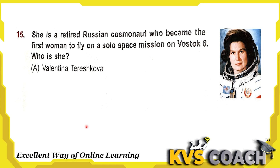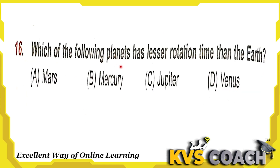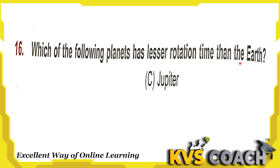Next question: which of the following planets has a lesser rotation time than the Earth? The right answer is Jupiter, which has a lesser rotation time than the Earth.